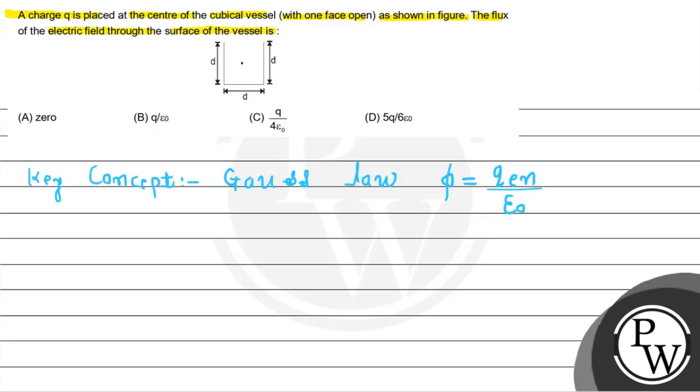Now see here, we are saying that we have a cubical vessel. So in that case, just because of the charge Q, what will be the flux of electric field through the surface of the vessel? That we have to find here.